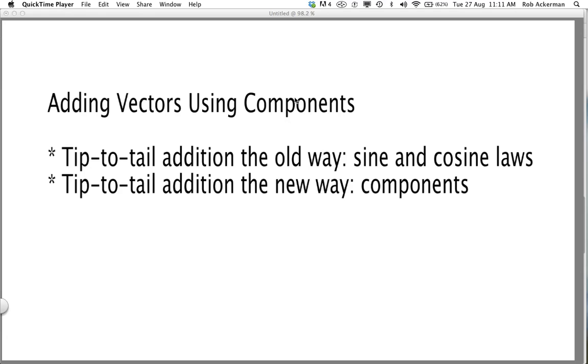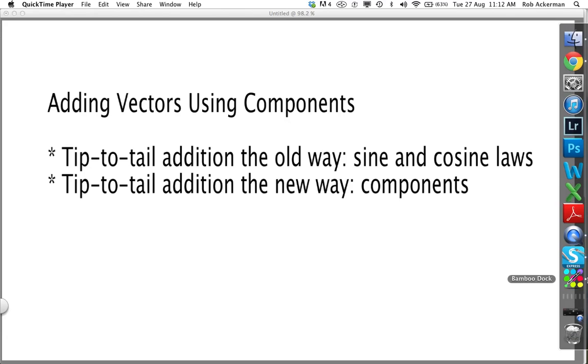We're going to look at the old way, the way you learned in grade 11, tip-to-tail vector addition and calculating the result of a vector addition using sine and cosine laws. And we're going to compare that with the new way, tip-to-tail vector addition using components. And hopefully by the end of this you're going to see that it is in fact easier and more efficient to use components. So let's get into it.